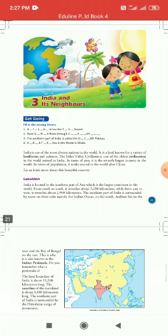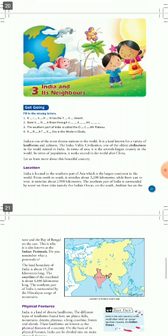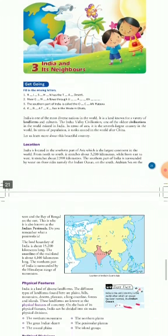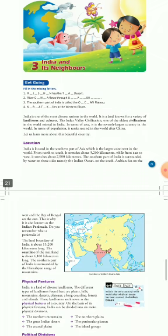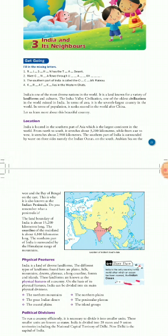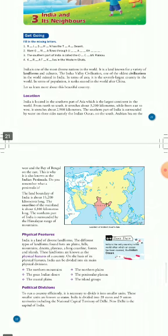Now we will know what makes India a beautiful country. First, location — India is located in Asia. Asia is the largest continent in the world. North to South is 3,200 km and East to West is 2,900 km. The southern part of India is surrounded by water bodies: the Indian Ocean to the South, the Arabian Sea to the West, and the Bay of Bengal to the East.